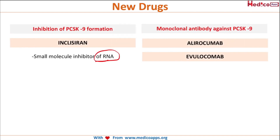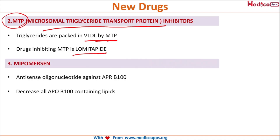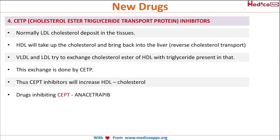The PCSK9 inhibitors include inclisiran (a small molecule RNA inhibitor) and the monoclonal antibodies alirocumab and evolocumab. The second type of newer drugs are microsomal triglyceride transfer protein (MTP) inhibitors — triglycerides are packed into VLDL by this protein, and the inhibitor is lomitapide. The third type is mipomersen, an antisense oligonucleotide against apoB-100, which decreases apoB-100-containing lipids in the body.